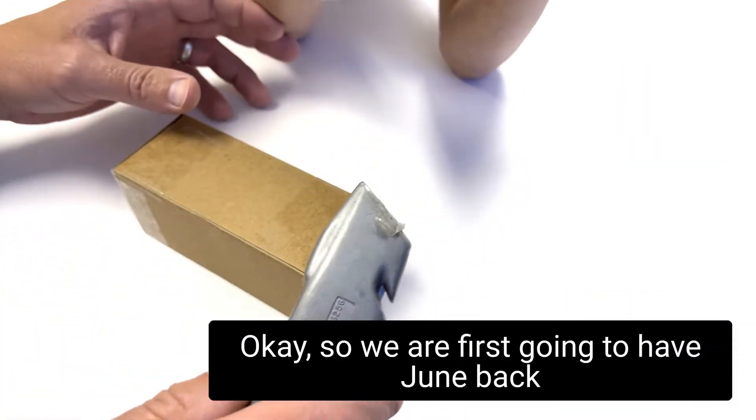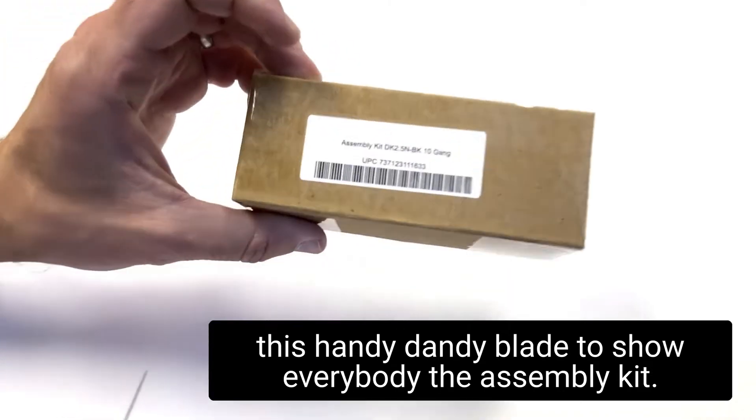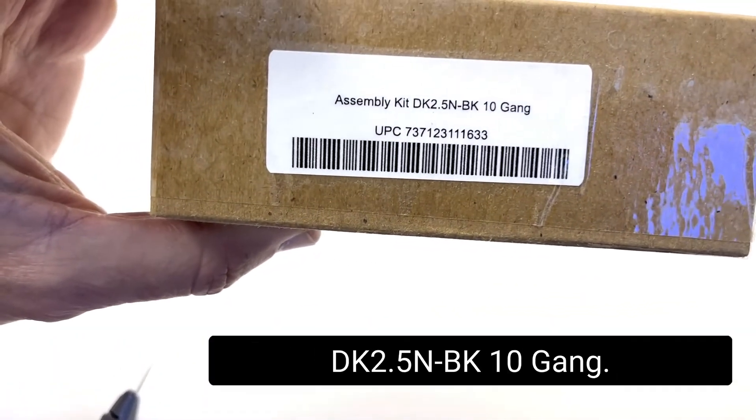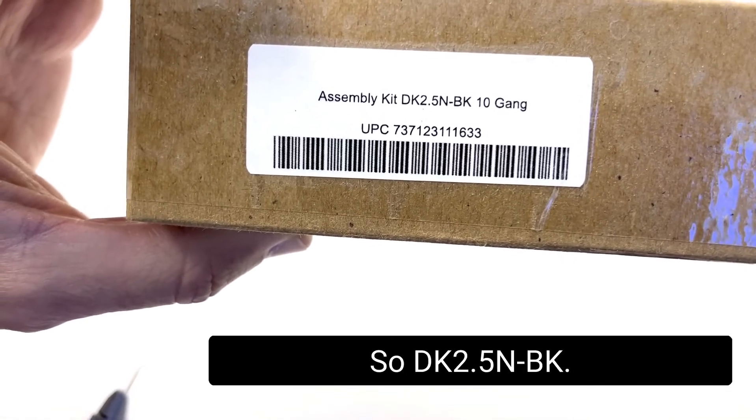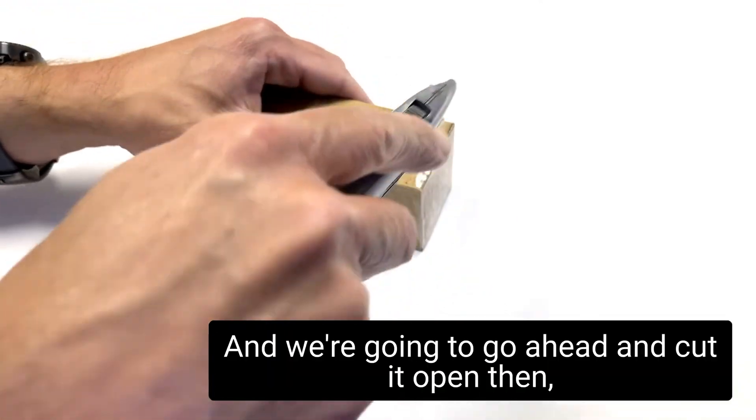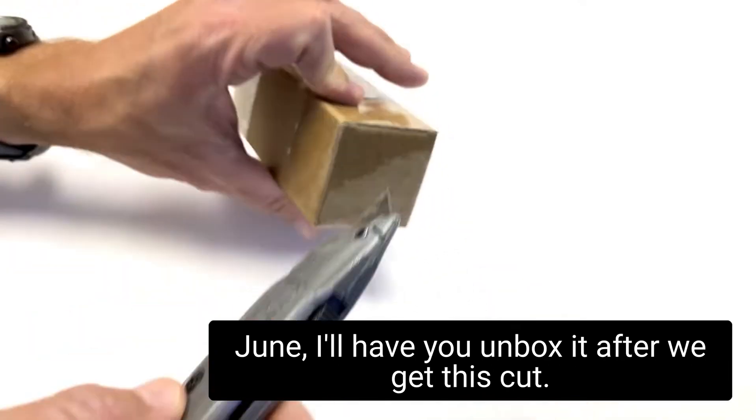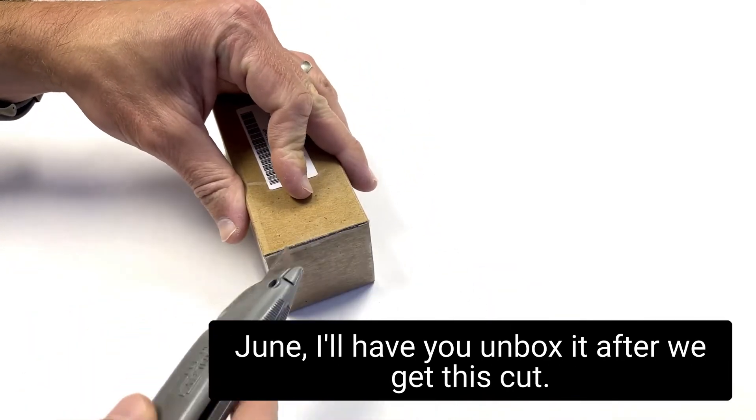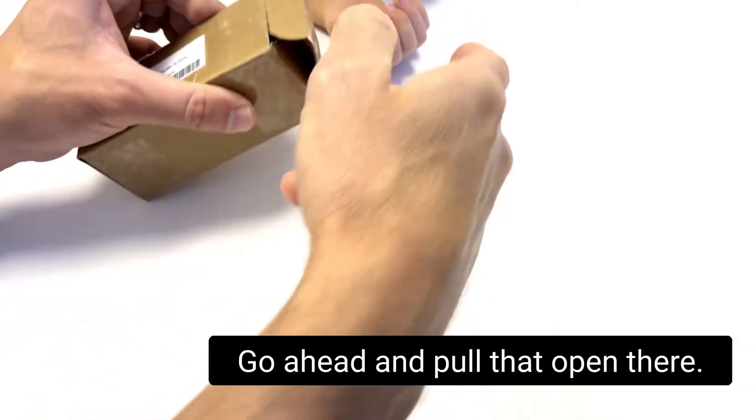So we are first gonna have June back up a little bit because I'm gonna open up this handy dandy blade to show everybody the assembly kit DK2.5N black 10 gang. So DK2.5N-BK. This is how it shows up to your door when you order it and we're gonna go ahead and cut it open and then June I'll have you unbox it. After I get this cut, put the blade away. Nobody gets hurt. Go ahead and pull that open there.